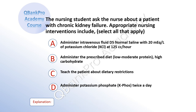The nursing student asked the nurse about a patient with chronic kidney failure. Appropriate nursing interventions include. Select all that apply. A: administer intravenous fluid, normal saline with 20 milliequivalents per liter of potassium chloride at 125 cc per hour. B: administer the prescribed diet, low to moderate protein, high carbohydrate. C: teach the patient about dietary restrictions. D: administer potassium phosphate (K-phos) twice a day.